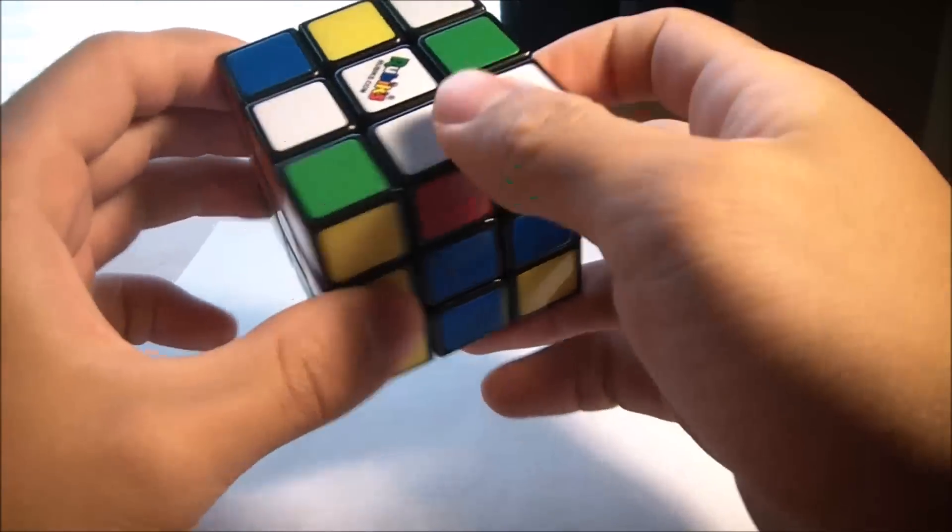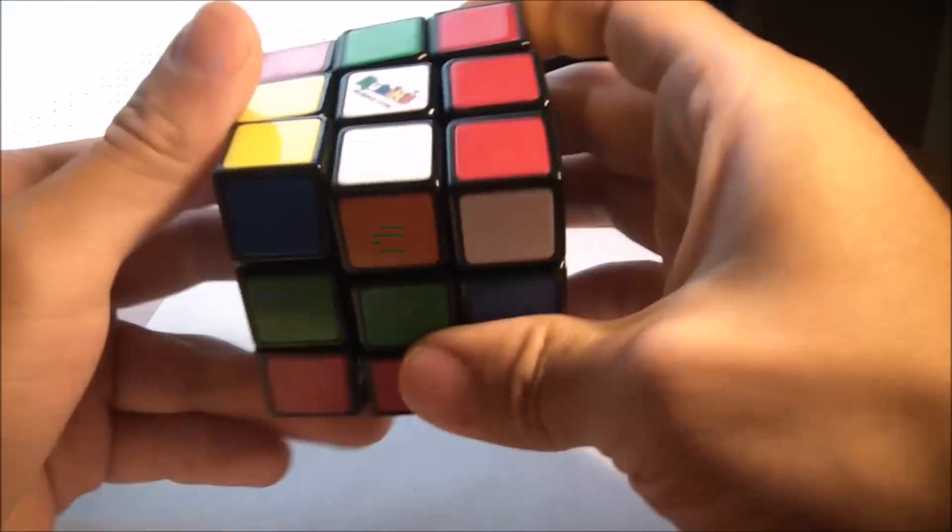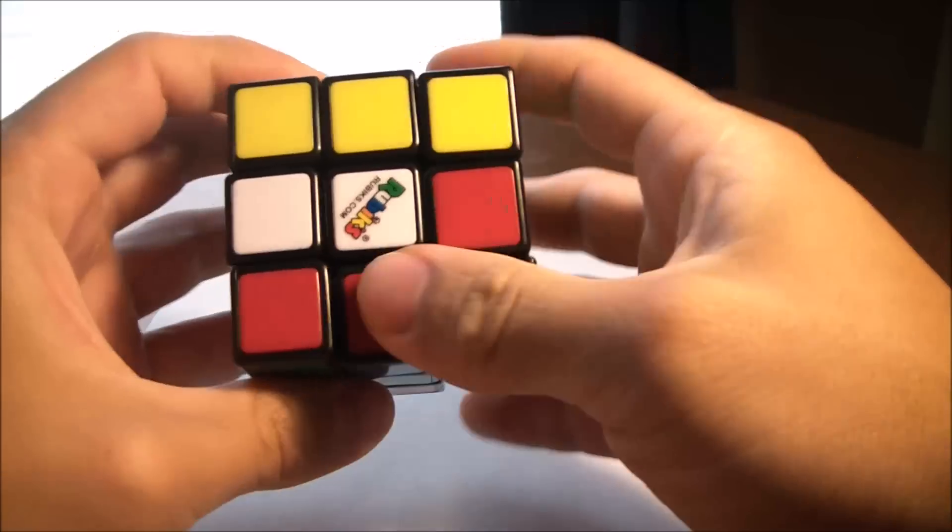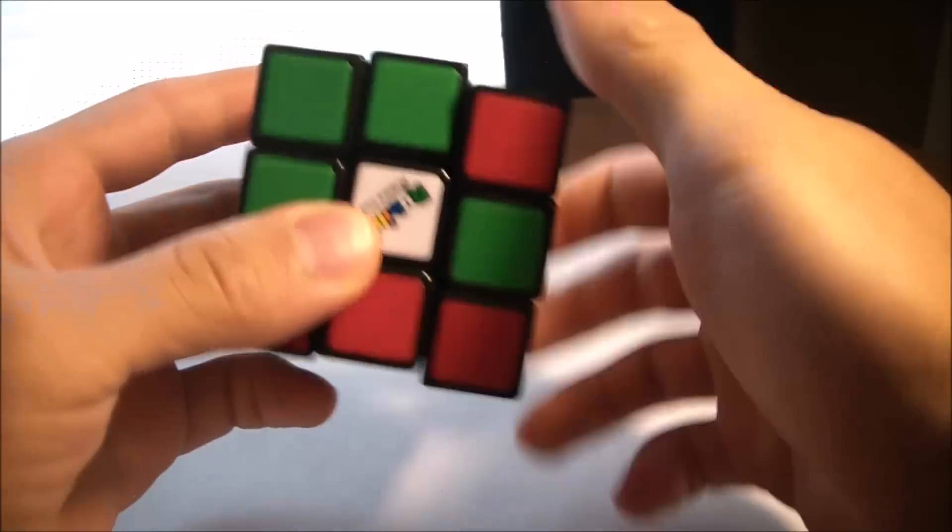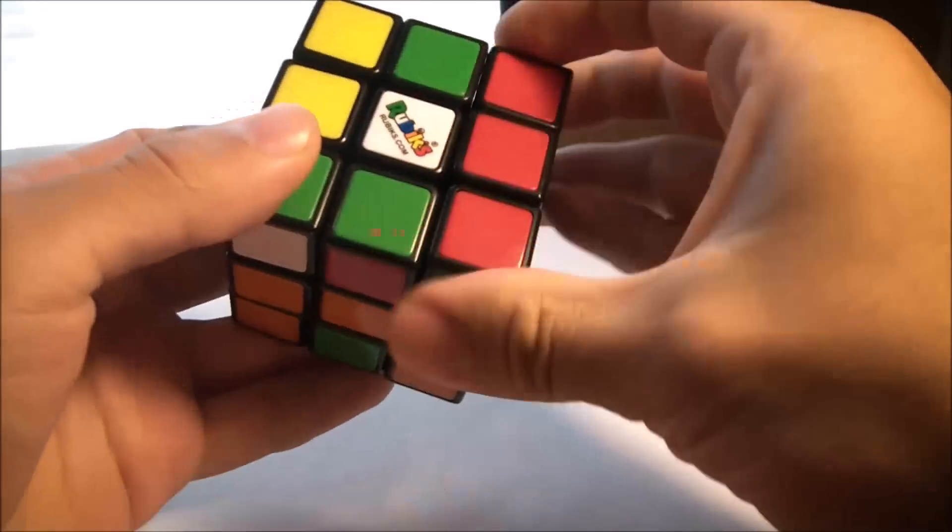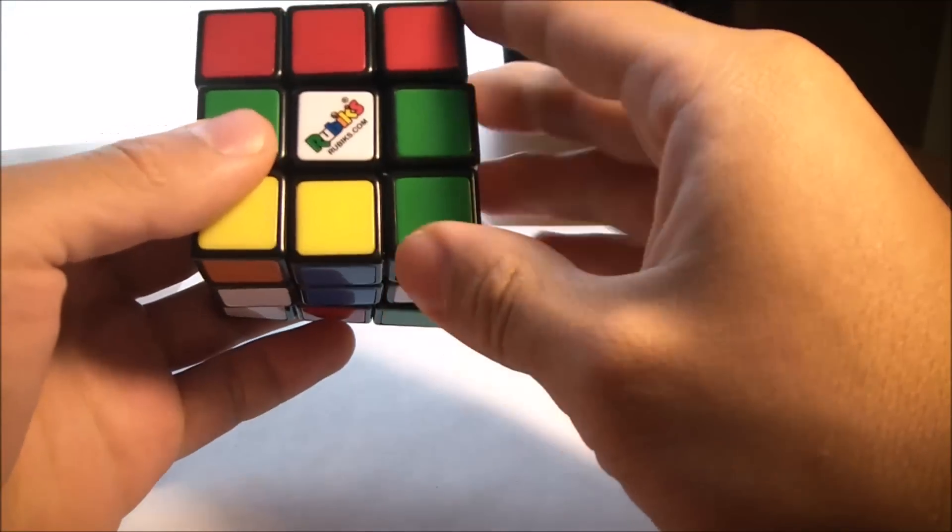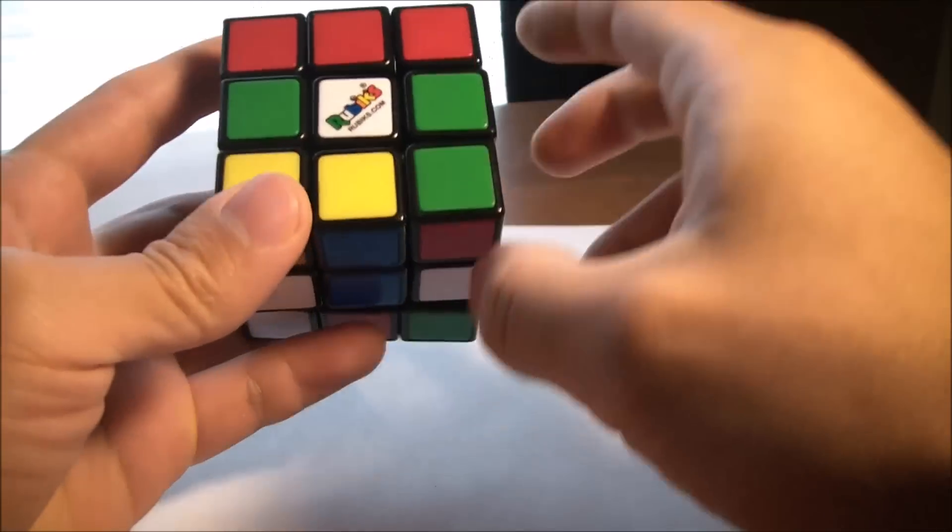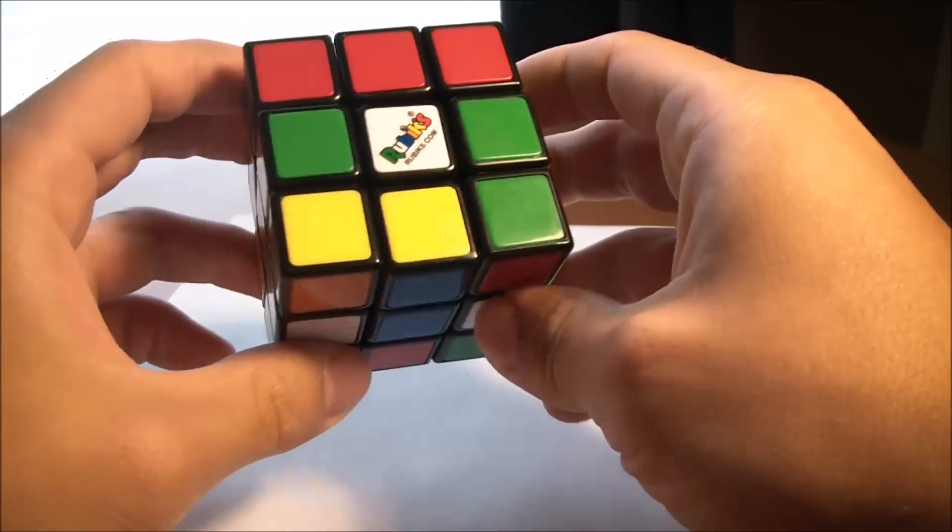With this, we're trying in the beginning to make a white cross. I guess you can start with any side, but for now I like to start with the white side because it's just the go-to and it has the nice little logo right there.